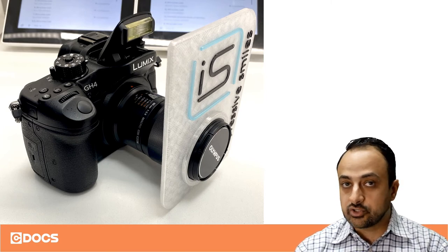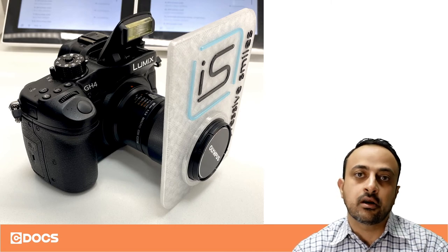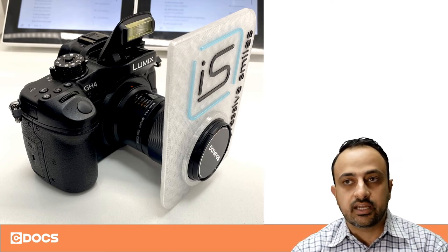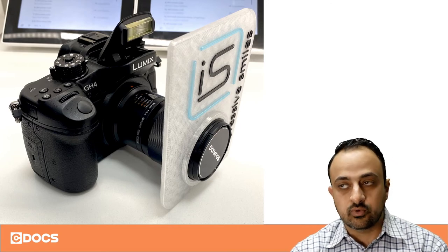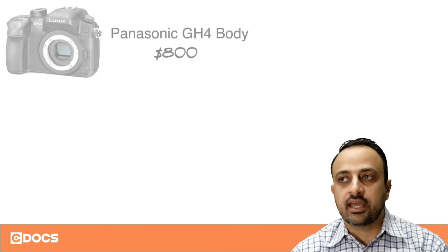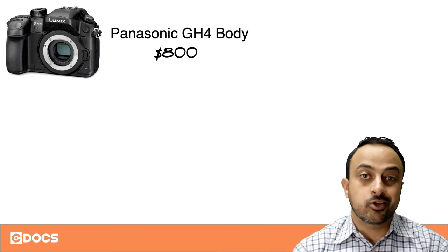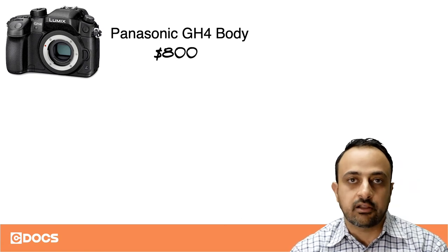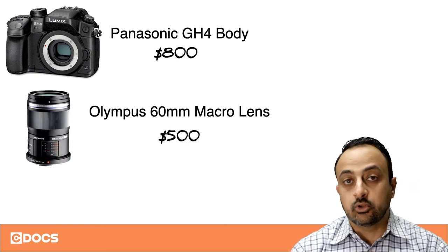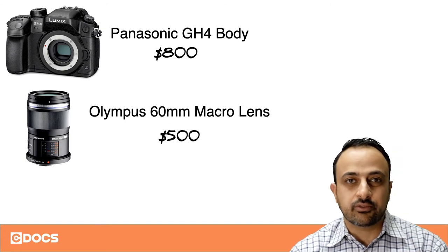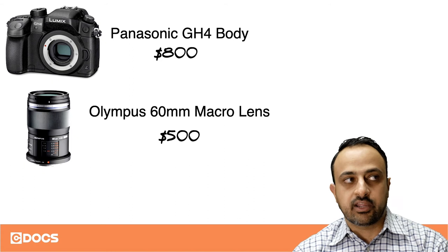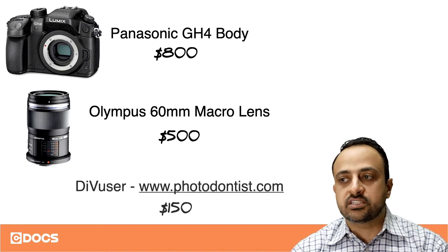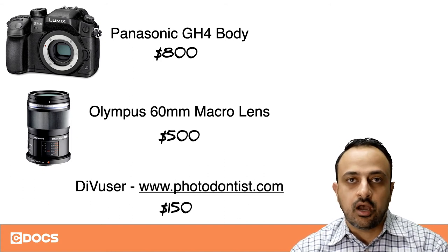You're also going to need a macro lens — this happens to be a 60 millimeter Olympus macro lens — and the entire package is very light and very small; my team loves taking images with this. The camera body is the Panasonic GH4, which you can buy on Amazon for around $800 if you can find them. The Olympus macro lens is about $500, so you're at about $1,300 to $1,400 total — definitely a lot less expensive than the other camera setups.